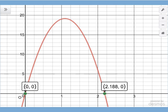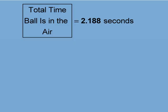Notice that the graph intersects the x-axis at two coordinates: the origin and 2.188, 0. This means that from the time the football is kicked to the time it hits the ground, 2.188 seconds elapse.